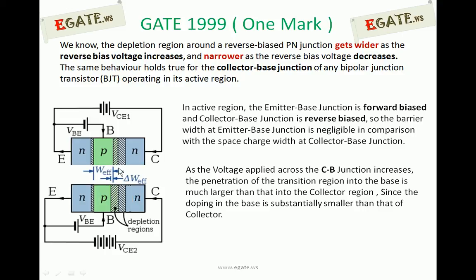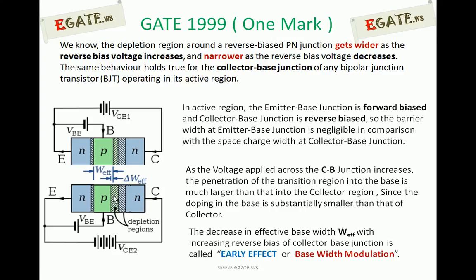Look at this diagram. When you increase the reverse bias voltage across the collector base junction — VCE2 is greater than VCE1 — the depletion region gets wider and penetrates more into the base side. Comparing the two diagrams, the difference in base thickness is treated as delta WF, the change in effective width of the base. This is called base width modulation — the process of change in effective base width with increasing reverse bias of the collector base junction. It is also called the early effect.